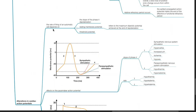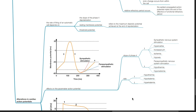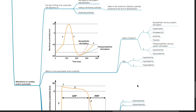The rate of firing of an automatic cell depends on the slope of Phase 4 depolarization, the resting membrane potential — which refers to the maximum diastolic potential achieved at the end of repolarization — and the threshold potential. The slope of Phase 4 is increased by sympathetic nervous stimulation, hypercarbia, increased pH, ischemia, and hypoxia.